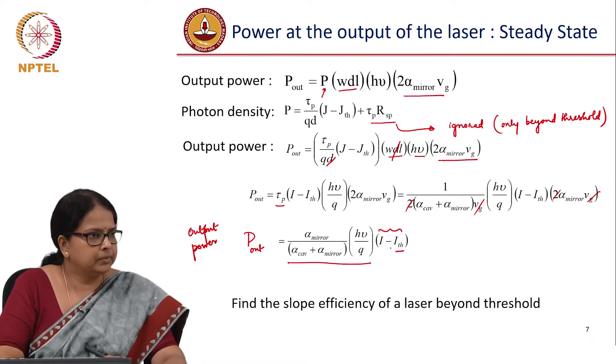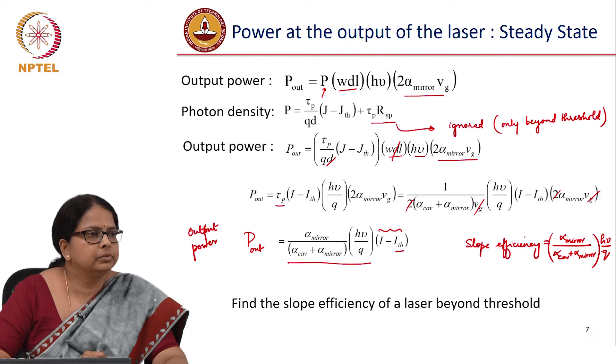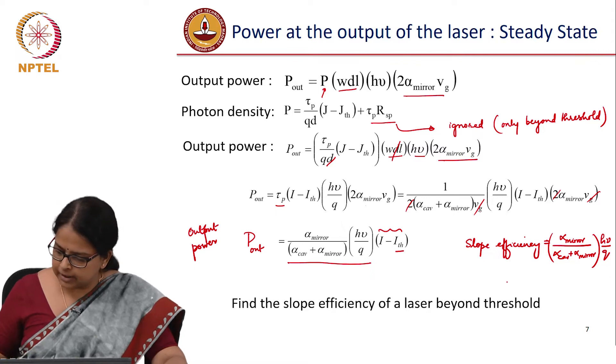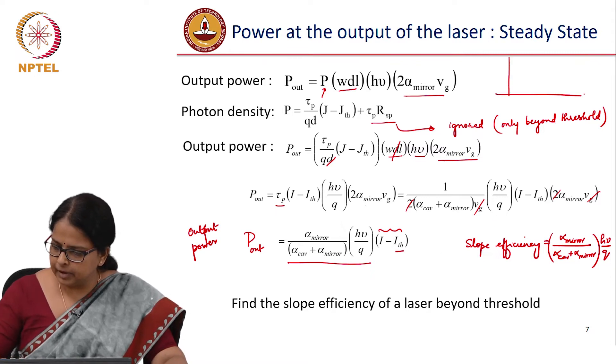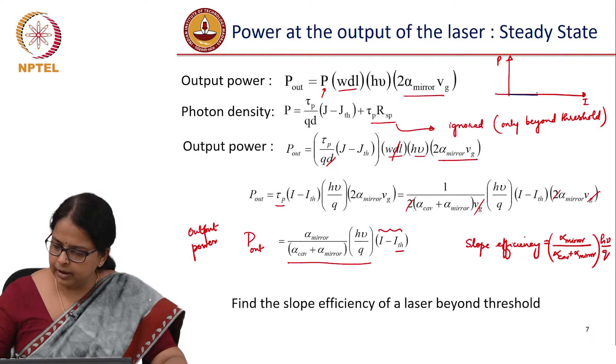P by I or dP by dI. So slope efficiency would be simply α_mirror divided by (α_cavity plus α_mirror) times hν divided by Q, which is dP by dI.